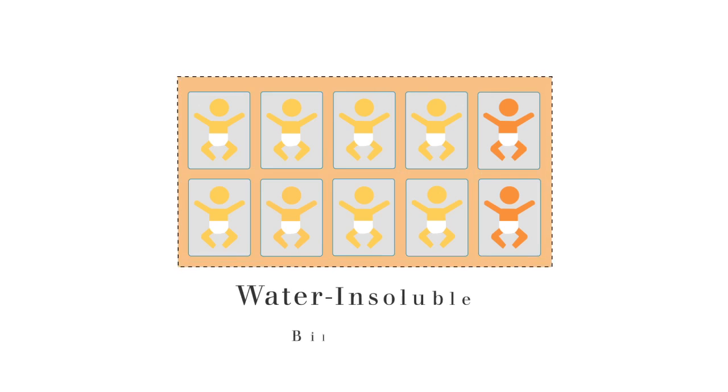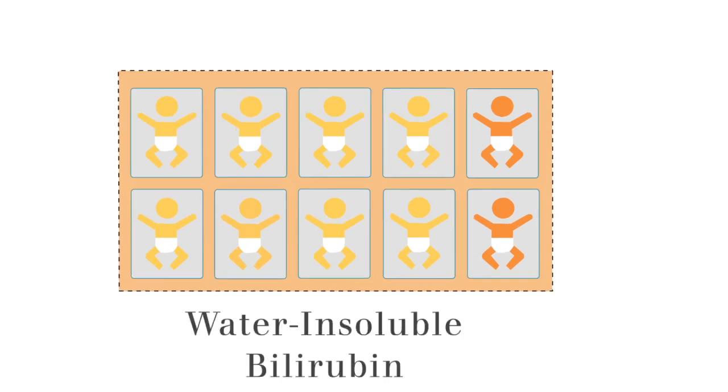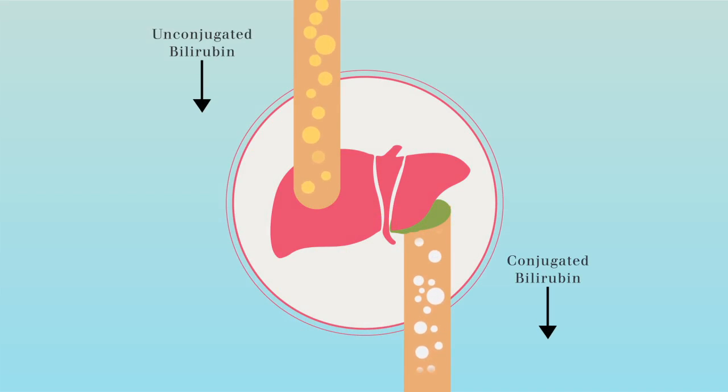80% of newborns show signs of jaundice caused by the accumulation of water-insoluble bilirubin. In healthy newborns, the bile pigment bilirubin becomes water-soluble when taken up by liver cells.